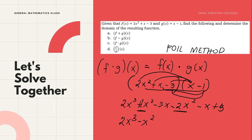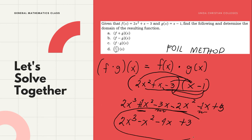The constant is 3. Since there are no more similar terms, the final answer for (f·g)(x) is 2x³ - x² - 4x + 3.